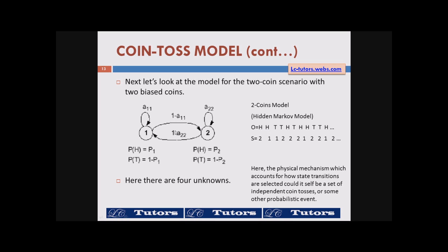The person has the choice to select either coin one or coin two. The physical mechanism which accounts for how state transitions are selected could itself be a set of independent coin tosses or some other probabilistic event. That means before he selects coin one or coin two, he can toss another coin to decide which coin to use — so it's another probabilistic event. There is therefore a second probabilistic behavior governing the selection of states.